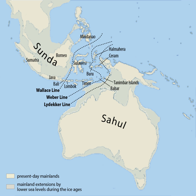When sea level was decreased by 30 to 40 meters or more, land bridges connected the islands of Borneo, Java, and Sumatra to the Malay Peninsula and mainland Asia. Because sea level has been 30 meters or more lower throughout much of the last 800,000 years, the current state of Borneo, Java, and Sumatra as islands has been a relatively rare occurrence throughout the Pleistocene.